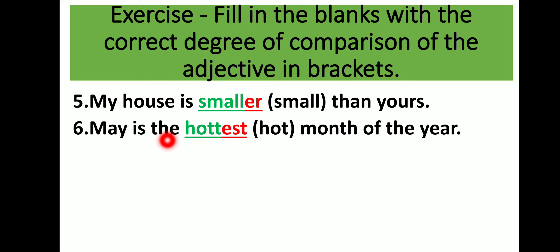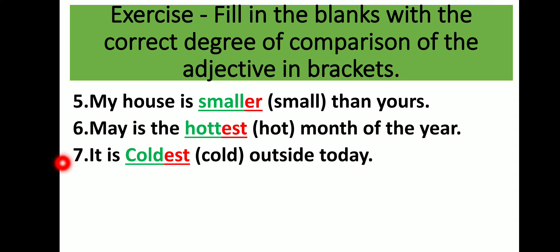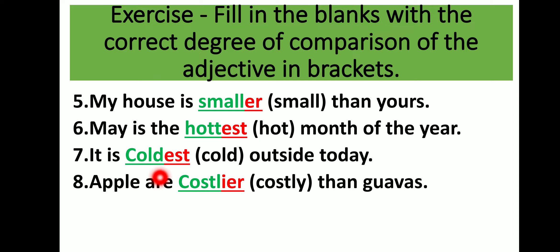Number 6: May is the hottest month of the year — 'hot' is compared with all months, so superlative degree is used; double the 't' and add -est: 'May is the hottest month of the year.' Number 7: It is the coldest outside today — superlative degree: 'It is the coldest outside today.'